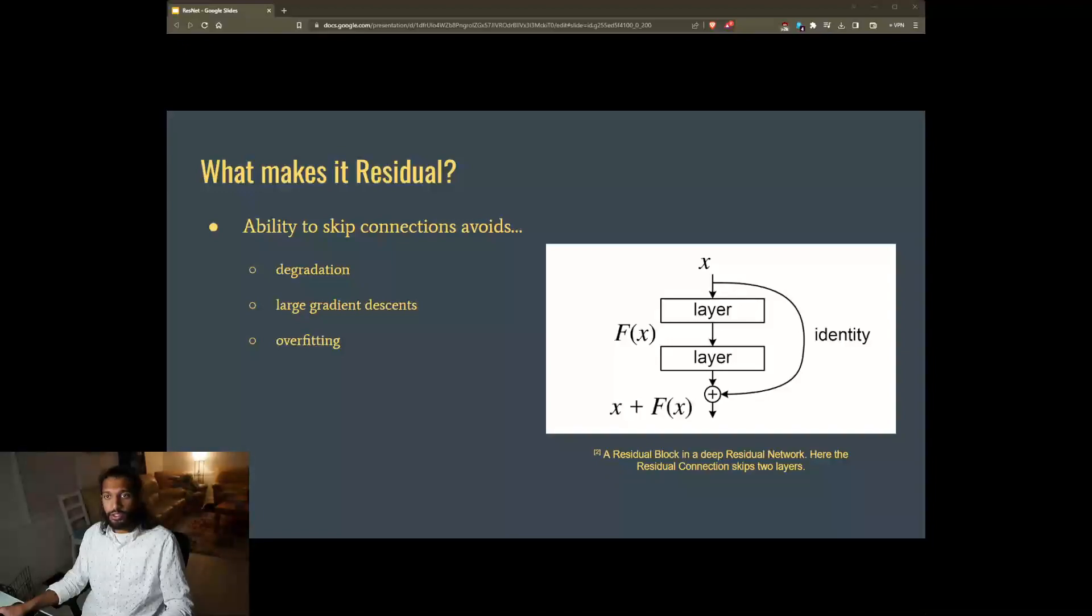The second path you see here is a shortcut or skip connection that directly connects the input x to the output of the block. The skip connection is also called the identity shortcut because it bypasses the convolutional layer and allows the original input to flow directly to the output.